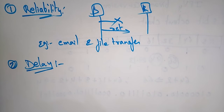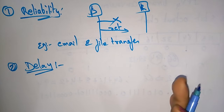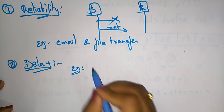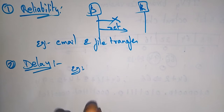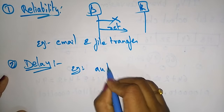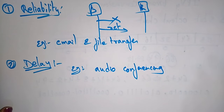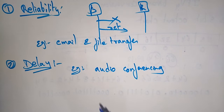Next is delay. Delay is getting information slowly — something is happening between the source and destination. The delay of a message from source to destination is a very important characteristic. For example, time delay cannot be tolerated in audio conferencing. While communicating, there needs to be minimum time delay.